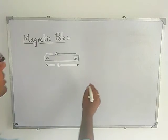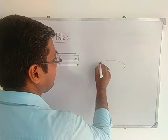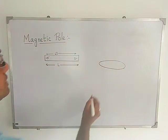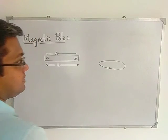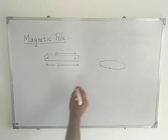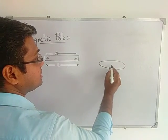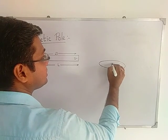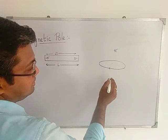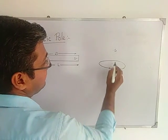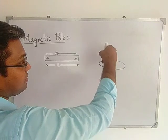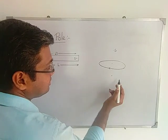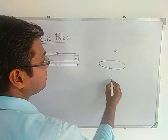After that, a current-carrying loop is considered as a magnetic pole. If the current is flowing in a particular direction, then from one side the north pole is created. If anyone observes from the other side, the current flow will be in the clockwise direction, and the south pole is created. From the opposite direction it will be anti-clockwise, so the north pole will be created.